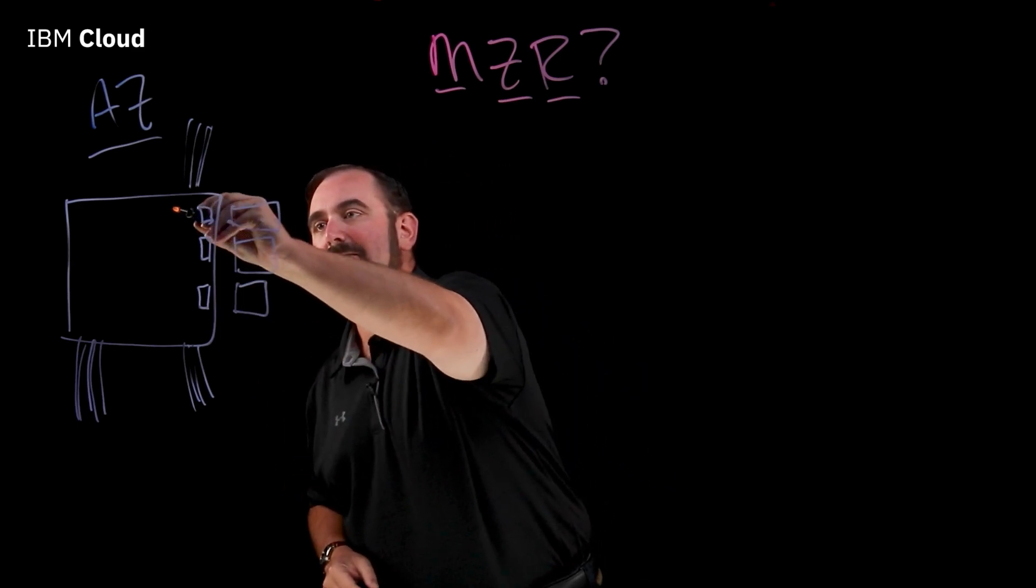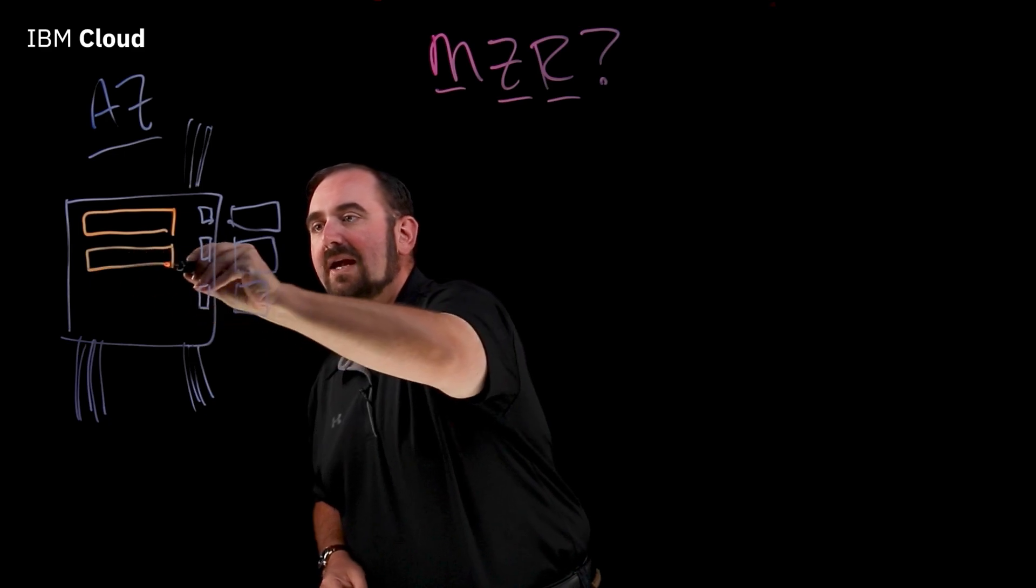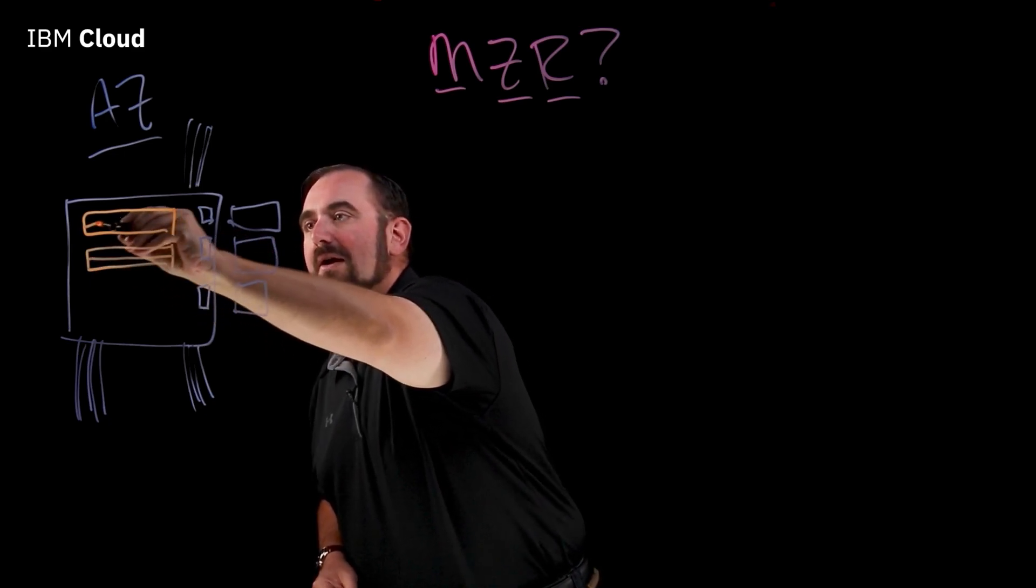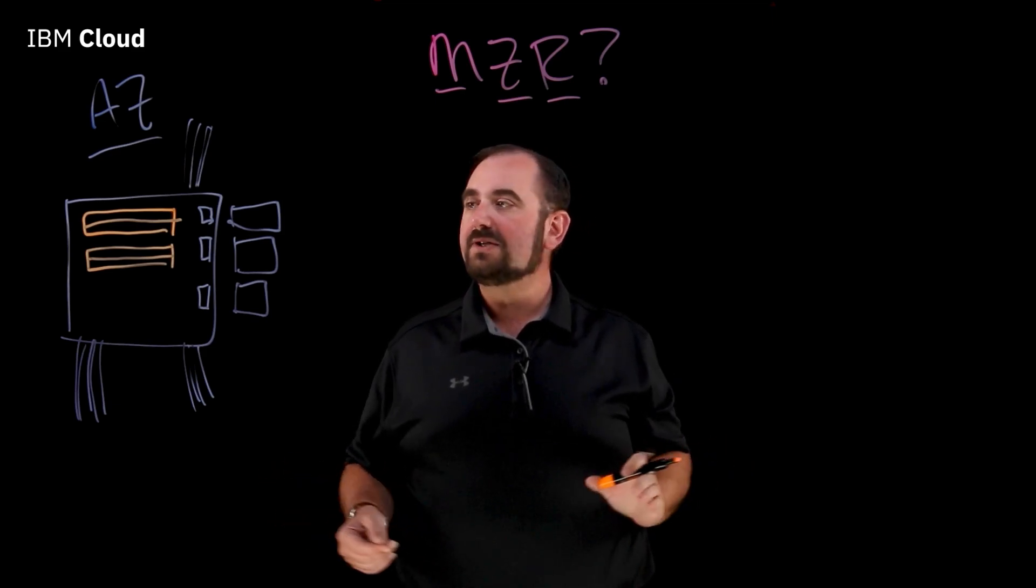So, inside this data center, we have rows of servers. And in these rows are racks. And in each rack are up to 43 servers.